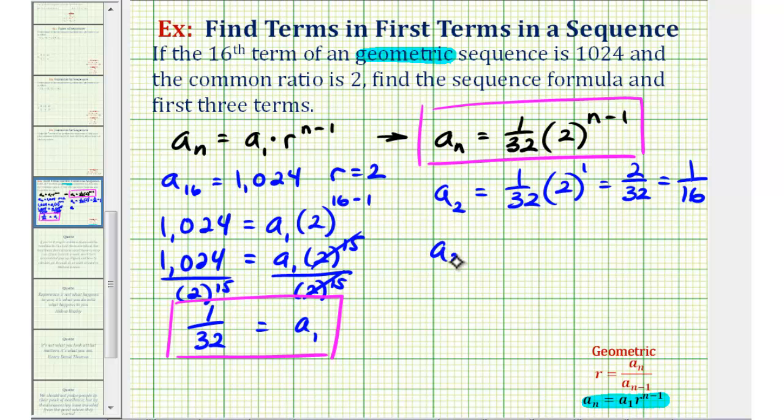And then for a sub three, our third term, we'd have one over 32 times two, raised to the power of three minus one, or the second power. Two squared is four, so we'd have four over 32, which simplifies to one eighth.